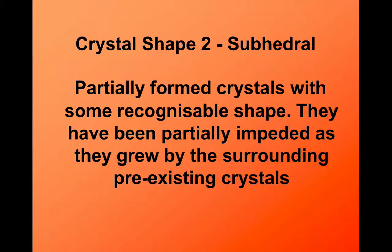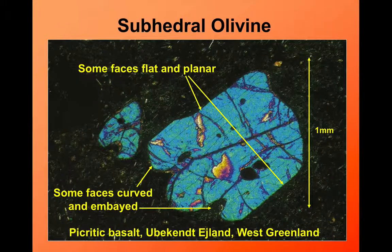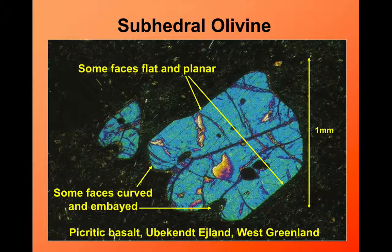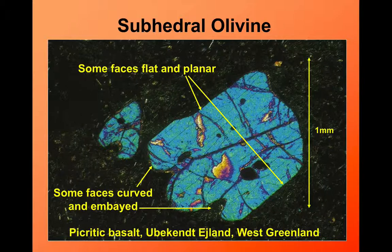A subhedral crystal is one that's partly formed. There's some shape to it, but it's not quite as perfect as the euhedral one. This is going to be obviously a little bit subjective. But you can see with this olivine crystal, we have got some flat surfaces, but some that aren't. This one would be described as subhedral. It's not a term we use very often, but it's important we know it.